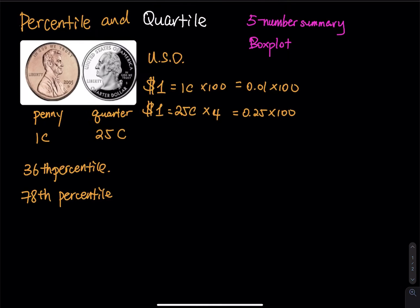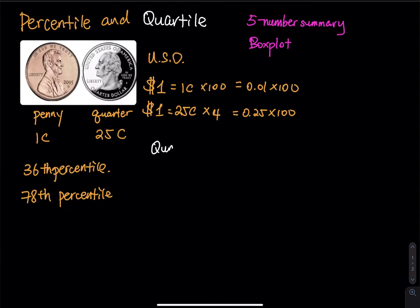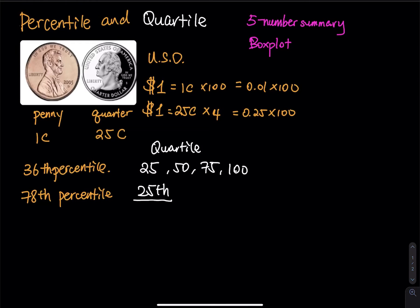For quartile, I cannot give you 36 percent or 78 percent anymore, because in order to do quartile, I have to give you 25 percent at a time. So I can either give you 25 percent, 50 percent, 75 percent, or 100 percent.